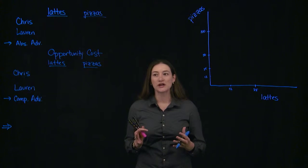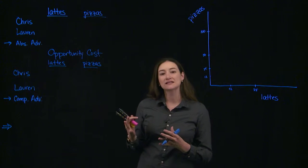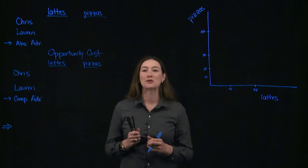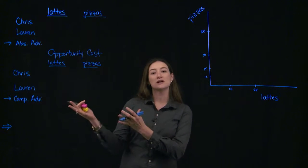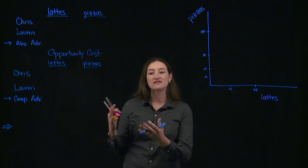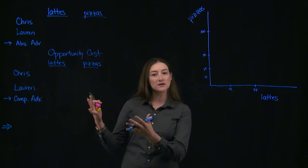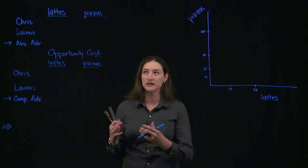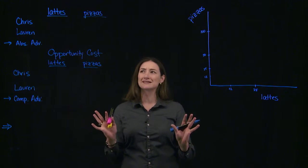Let's do another example of comparative advantage and trade. To do that, let's think about two students — we've got some Chris's and some Lauren's. Let's imagine they're working at a restaurant, each with different strengths and abilities. We can imagine what their production possibilities frontier looks like, what they're capable of producing. This particular restaurant produces just lattes and pizza.